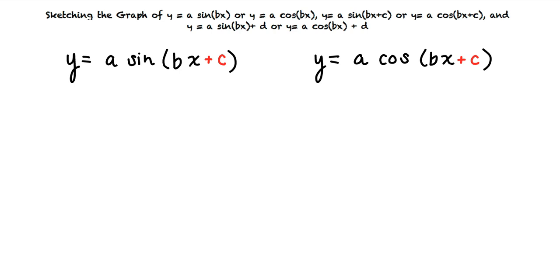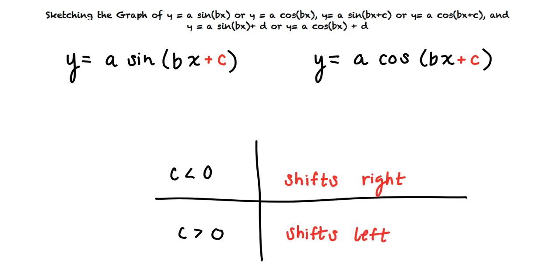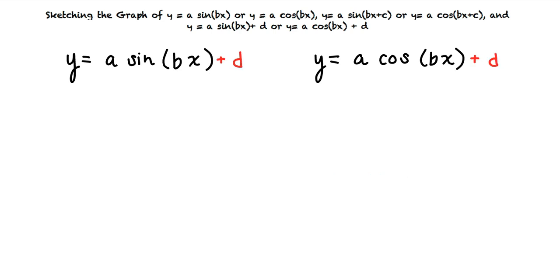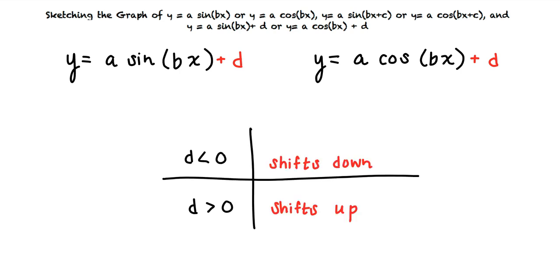Adding a constant to the x-angle value inside the parentheses moves the graph that number of units to the left or the right. If c is less than 0, then the graph shifts right. If c is greater than 0, then the graph shifts left. This means that we will add c to the x-coordinates of the graph to get our new graph. Adding a constant outside the parentheses moves the graph that number of units up or down. If d is less than 0, then the graph shifts down. If d is greater than 0, then the graph shifts up. This means that we will add d to the y-coordinates of the graph to get the coordinates for our new graph.